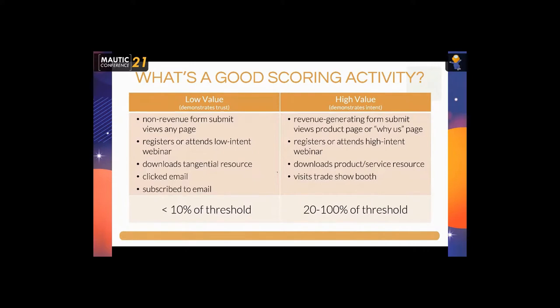Coming to talk to you at a trade show booth — those are high value scoring activities. Depending on the activity, you can apply points somewhere between 20% and 100% of your threshold. Why 100%? If somebody submits a form to ask to be contacted to buy your product or service, they've reached the threshold. This is useful if you're syncing points to a CRM where salespeople want to rank contacts by intent — having maxed-out points for somebody who has literally raised their hand to buy is important.